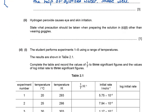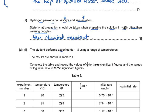Hydrogen peroxide causes eye and skin irritation. The question asks what precaution should be taken when preparing the solution, other than wearing goggles. To avoid contact with skin, always wear chemical resistant gloves — it is important to specify 'chemical resistant' because not all gloves protect against chemicals.